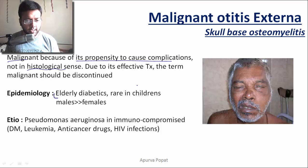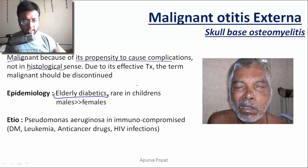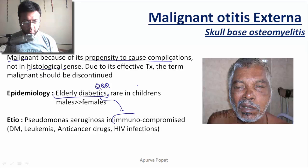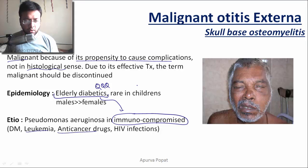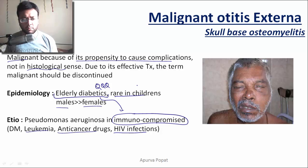It is most commonly seen in elderly diabetics — patients with uncontrolled diabetes mellitus. This is a prerequisite for malignant otitis externa. Due to their immunocompromised state, it can also be seen in patients with leukemia, those on anti-cancer drugs, or patients with HIV infection. It is rare in children but more common in males compared to females. The most common causative agent is Pseudomonas aeruginosa.